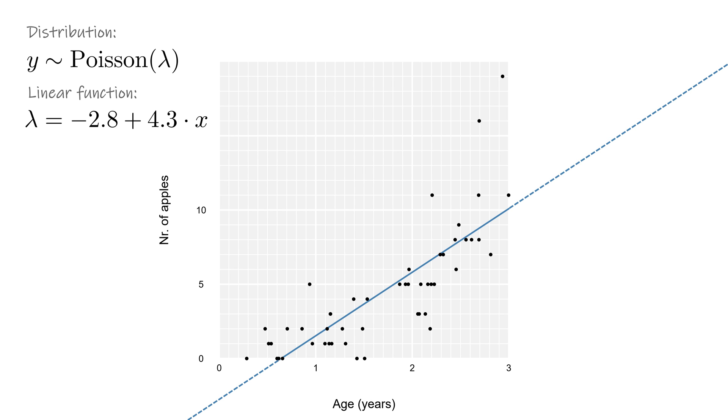As a result, even within the range of our data, we start predicting negative rates. While counts are low at this value for age, we clearly still count more than zero apples on average, and definitely not a negative number. Besides, the Poisson distribution isn't even defined for negative rates. So this model cannot make any predictions below a certain age. Somehow we need to fix this.